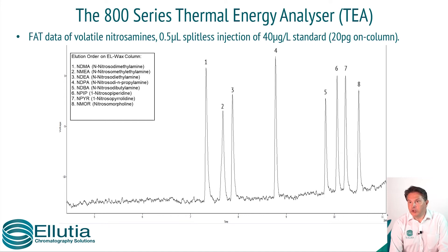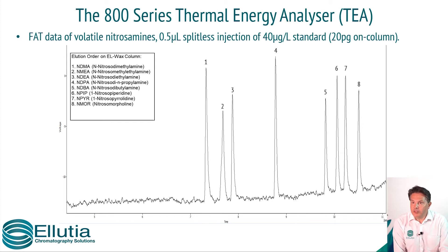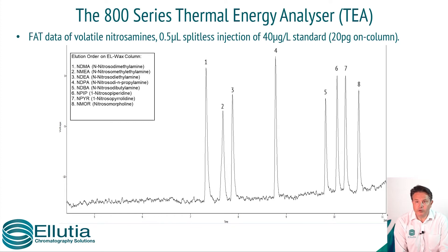This shows the sensitivity that can be achieved using the TEA. This test is performed on every instrument that leaves the Aleutia factory. As you can see, these are eight of the most common volatile nitrosamines that are injected.